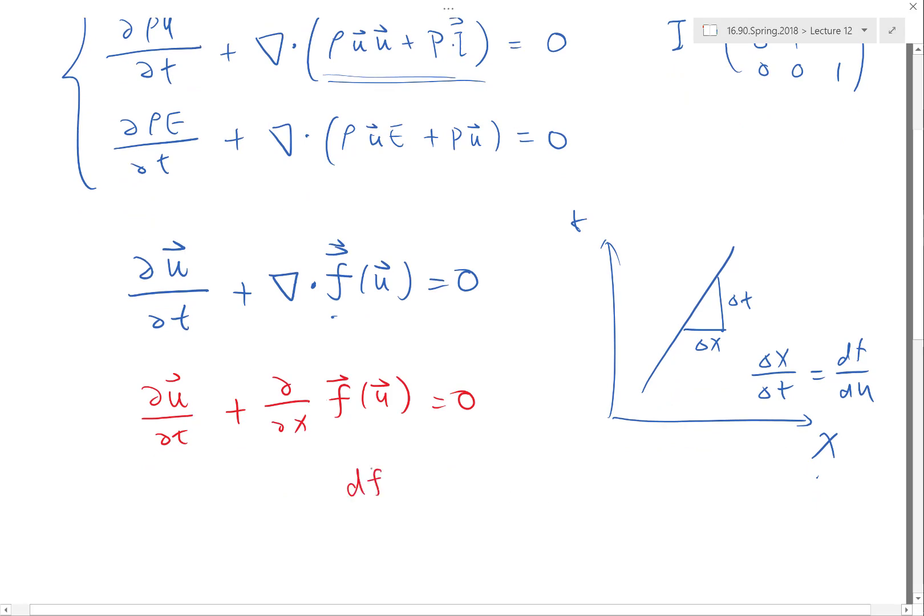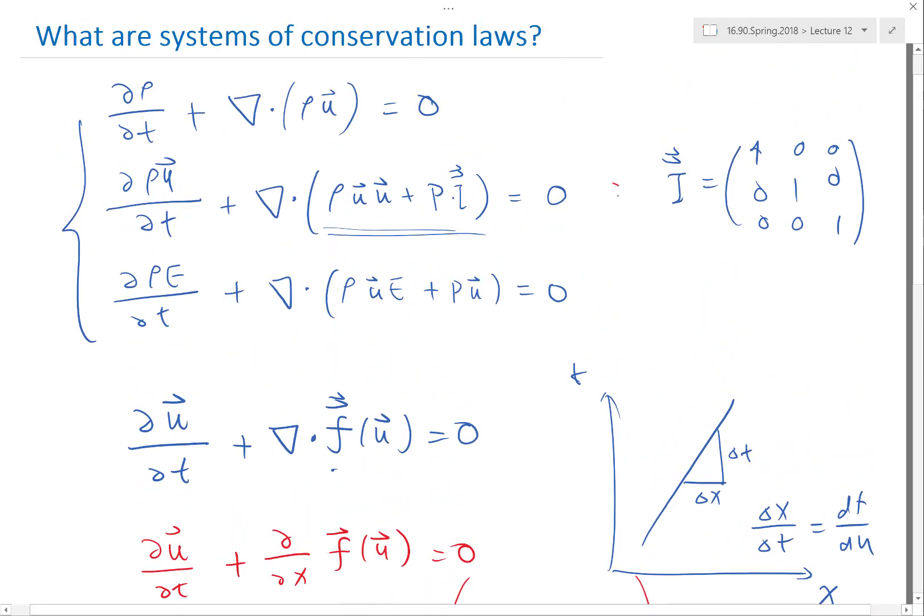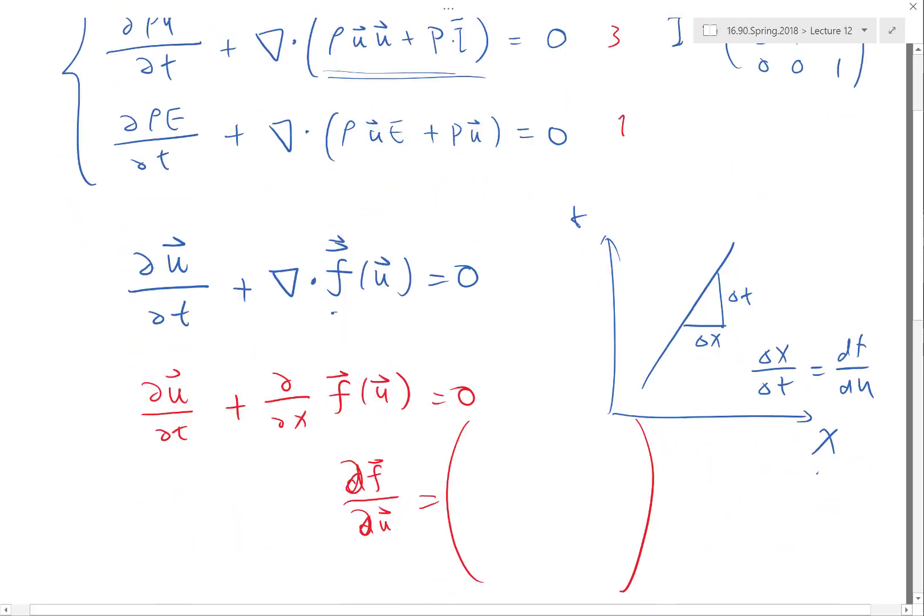What is df/du in our case? df/du actually appropriately should be written as ∂f/∂u - it's actually a matrix. It's actually a multi-dimensional matrix in the Navier-Stokes equation. Because this is three equations, one equation, one equation, this df/du, even let's say the flux in one spatial dimension, is a 5×5 matrix.